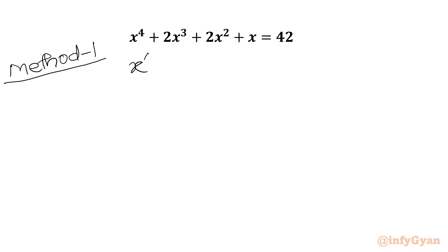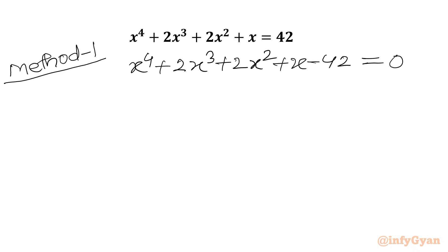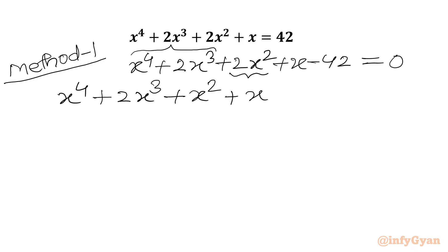First of all, we will write all the terms to one side: x⁴ + 2x³ + 2x² + x − 42 = 0. Now we have x⁴ + 2x³, so I will split 2x² as x² + x². I will write x⁴ + 2x³ + x², then again x², then +x, then −42, and RHS is 0.